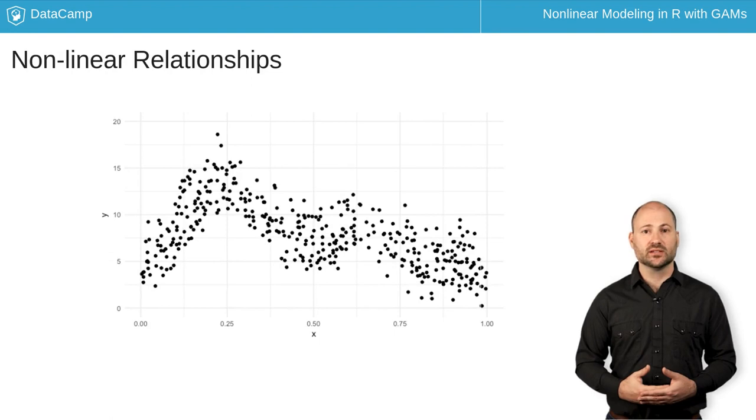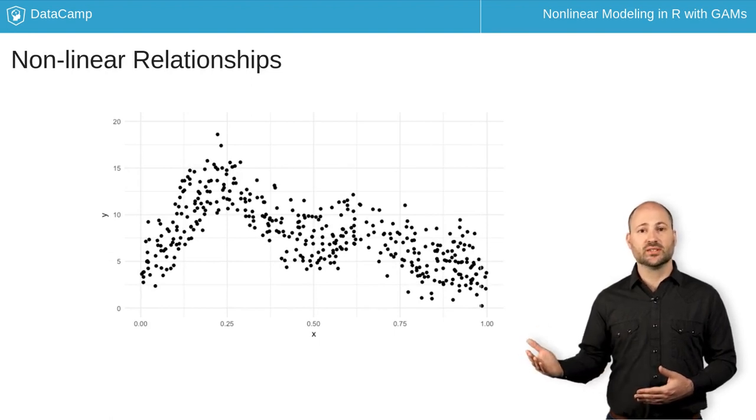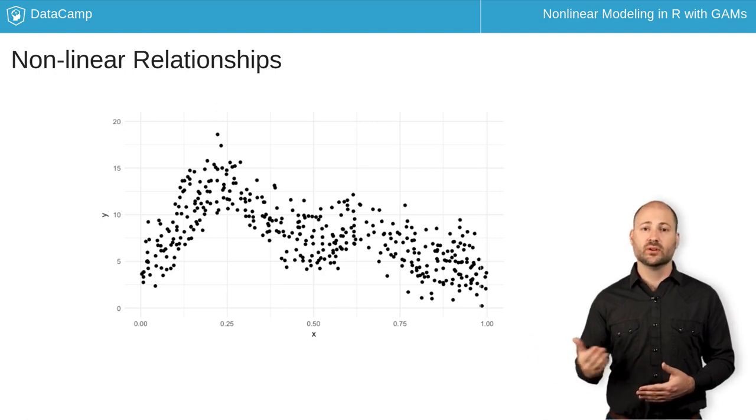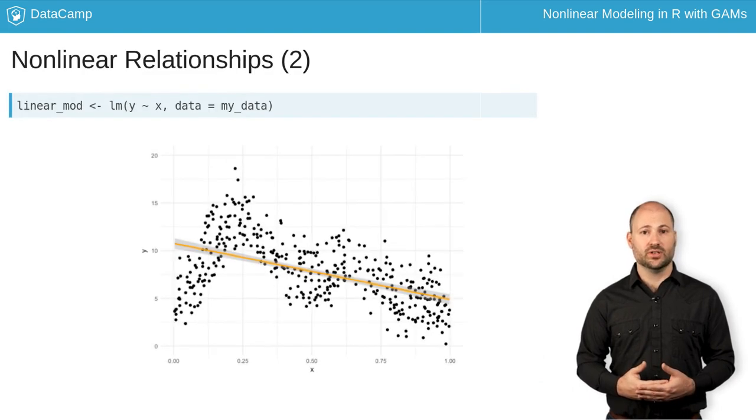GAMs let us flexibly model non-linear relationships. Here, I have made a scatter plot of two variables, x and y. We can see from the scatter plot that there is clearly some relationship between the variables, but it is not linear. If we fit a linear model to the data using the lm function and the usual formula syntax, we can see it won't do a very good job. The model doesn't capture key aspects of this relationship.